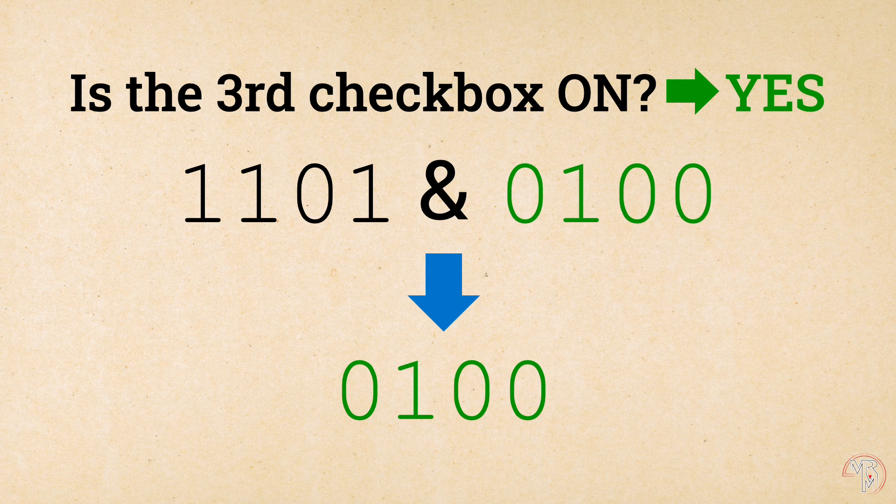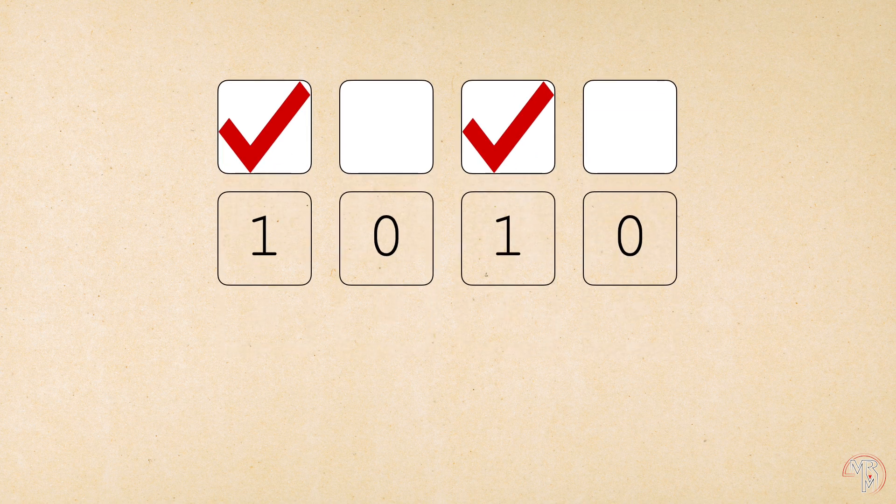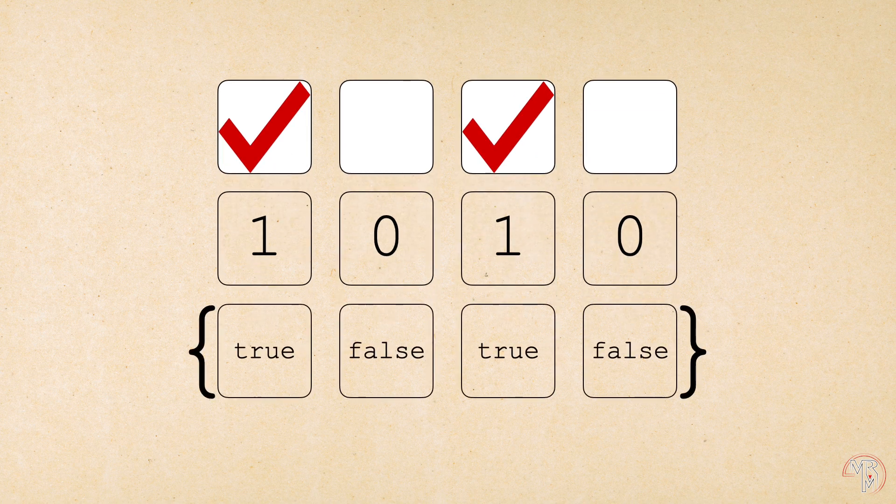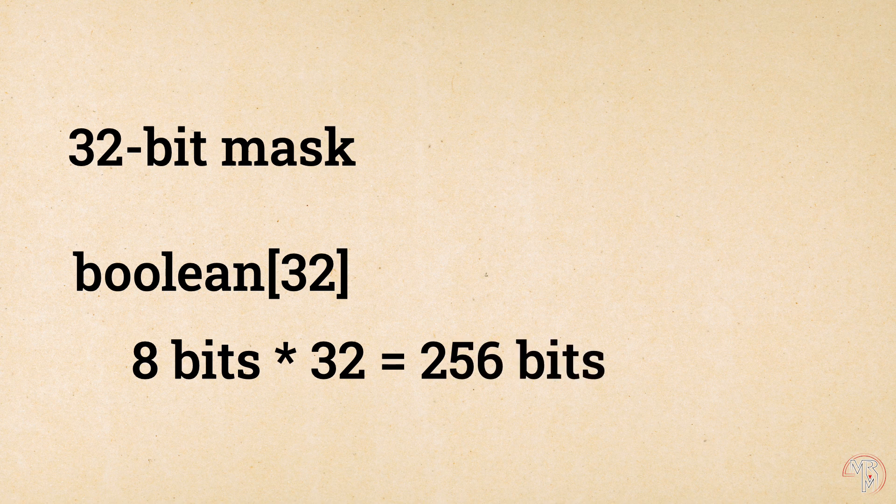Also, using bit masks is more memory efficient. For instance, to track the state of checkboxes as we did before, we could use a boolean array, where each boolean value represents the state of the corresponding checkbox. Now, a single 32-bit mask can store states of 32 checkboxes. To do the same thing with a boolean array, we would need 32 boolean values. And each boolean value would take a minimum of 8 bits, depending on the programming language.